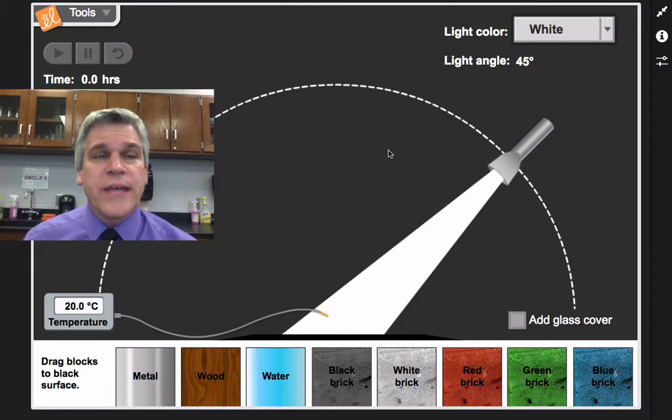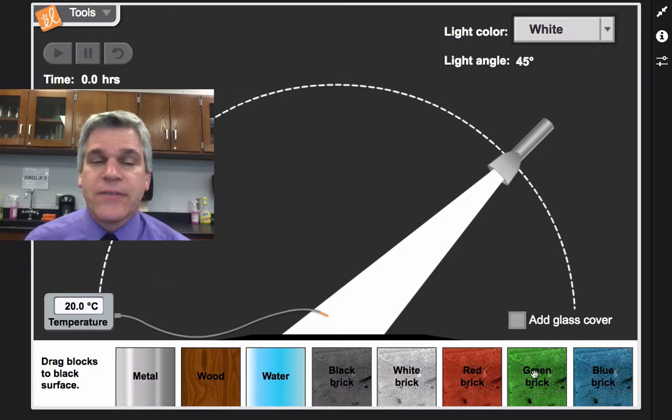So notice what's happening here. I have all these variables that I'm trying to keep as the same as I can every single time I test a different substance. So every time I test my independent variable, I want to make sure that all my controls are the same. I'm always going to use a white light. I'm always going to use the same angle. And I'm always going to, for my dependent variable, measure how that temperature increased.